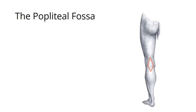Hi, I'm from Teach Me Anatomy and in just over two minutes I've had to talk about the borders, contents and clinical relevance of the popliteal fossa. So what is the popliteal fossa? It is an anatomical space located behind the knee joint and it's the main pathway by which structures enter and leave the lower leg.